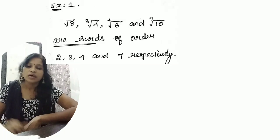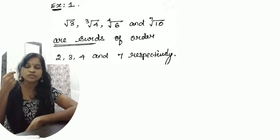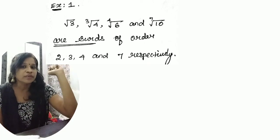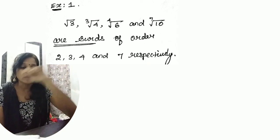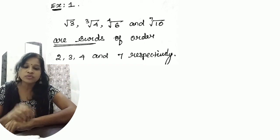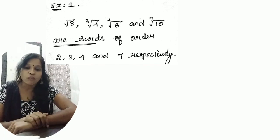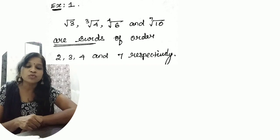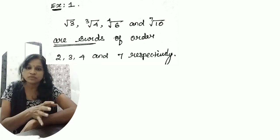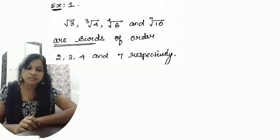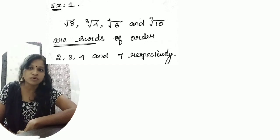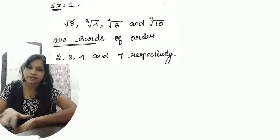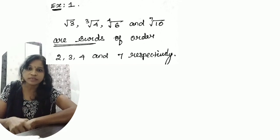Now let me show some examples. Look at the first example: √3, ∛4, ⁴√6, and ⁷√10. These numbers are surds. Take √3 — we already know it is an irrational number, so we can confirm it is a surd.